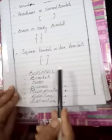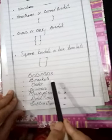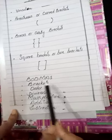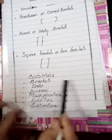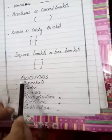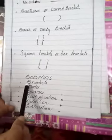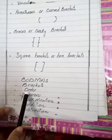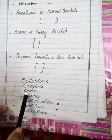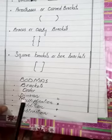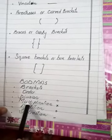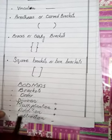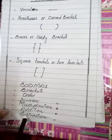The rule which we use to open and solve brackets is called BODMAS. In BODMAS: B means Bracket, O means Order — jis order se wo bracket open hogi. D means Division, M means Multiplication, A means Addition, and S means Subtraction.